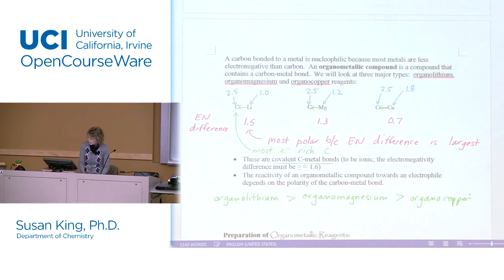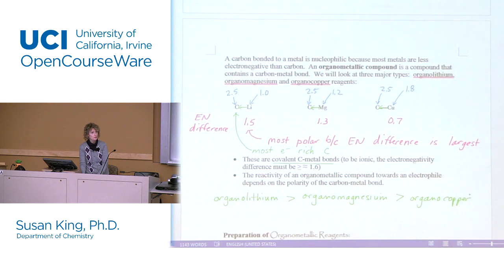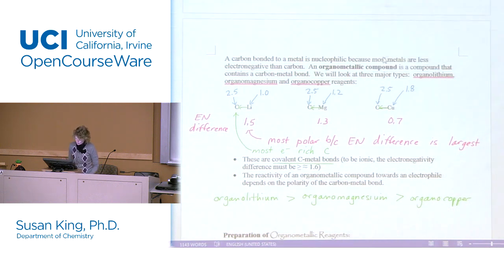For the most part we're going to use organolithium and organomagnesium compounds interchangeably. But there is one reaction where you need a super reactive electrophile that will work for organolithium but not for organomagnesium — that's coming up. Organolithium are the most reactive and organocopper are the least reactive.